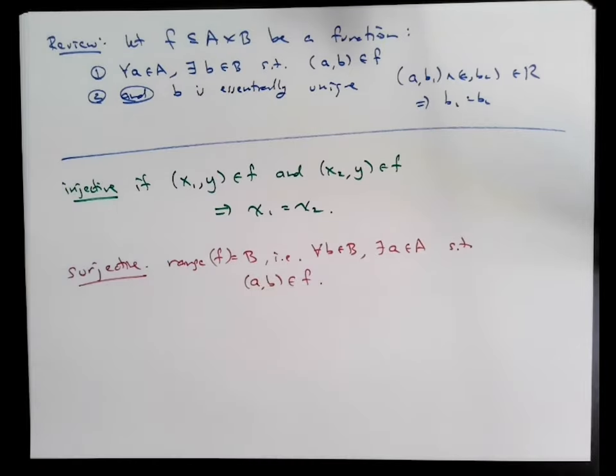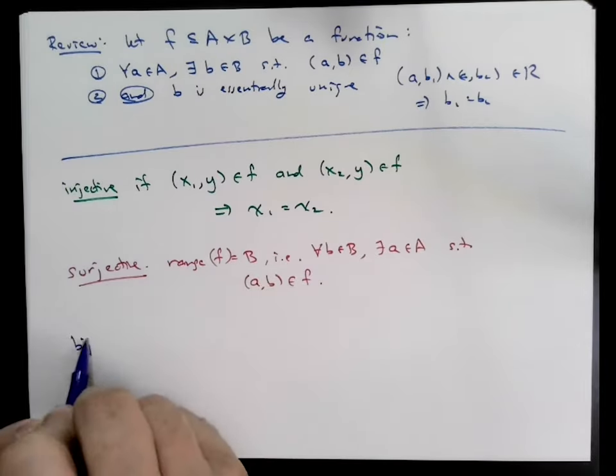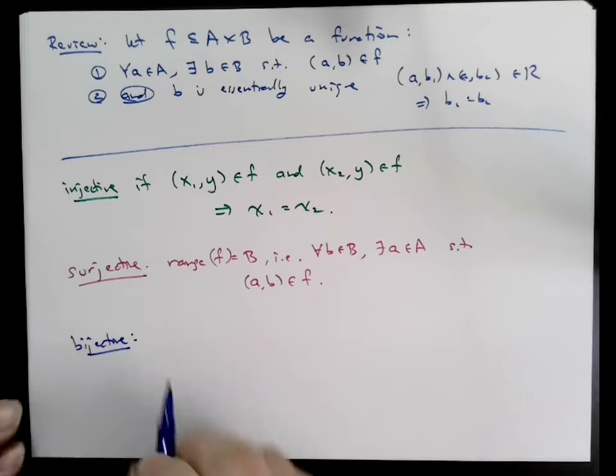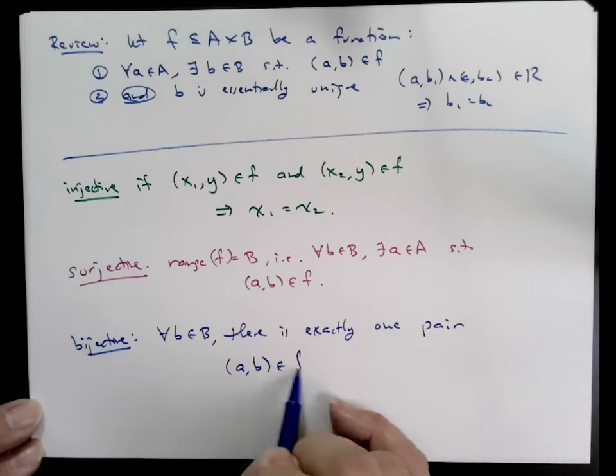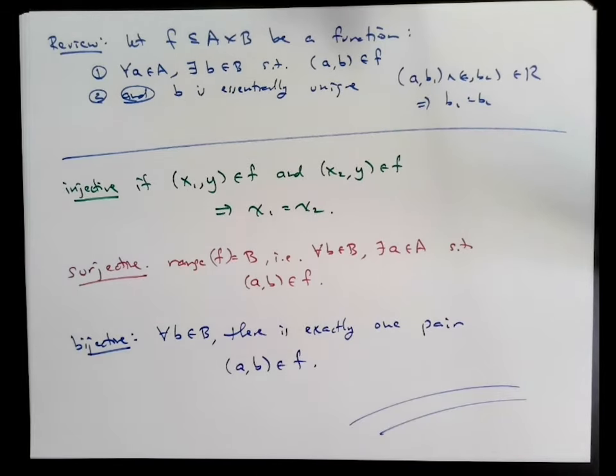And finally, we said a function is bijective if and only if, for every a in A, (a, something) appears exactly once, and for every b in B, (something, b) appears exactly once.